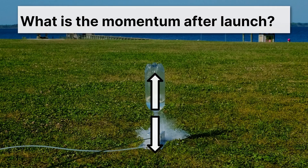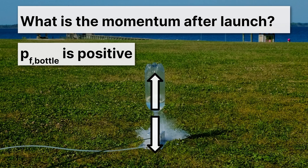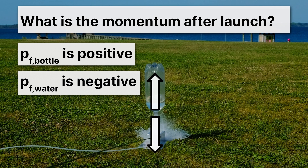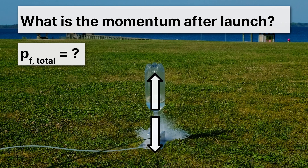What is the momentum after the launch? We have to realize that we're asking about not the momentum of the bottle, or the momentum of the water, but the momentum of both. The momentum of the bottle is positive, while the momentum of the water shooting out the bottom is negative. What's the momentum altogether after the launch? If before the launch it was zero, after the launch it has to be zero too. That's what makes conservation of momentum work for launching things — the momentum downwards and upwards have to be equal and opposite to maintain that zero momentum.